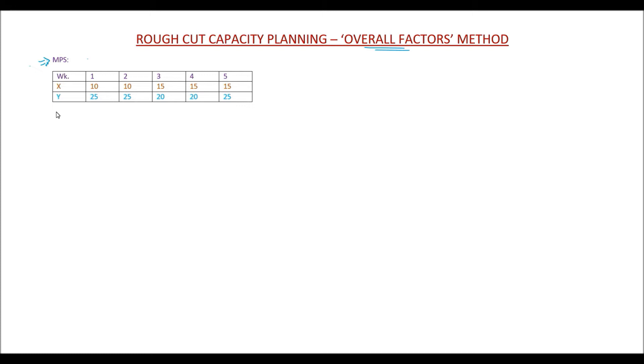In order to produce one unit of X, the standard hours required is 1.557 hours per piece. For X it is 1.557, and for Y it is 5.331.